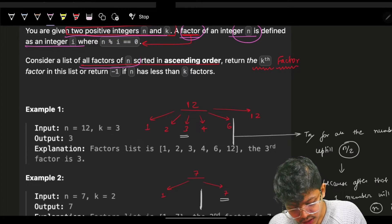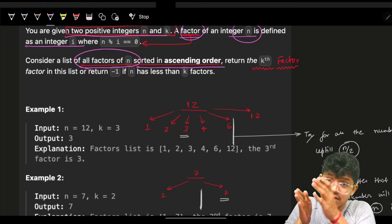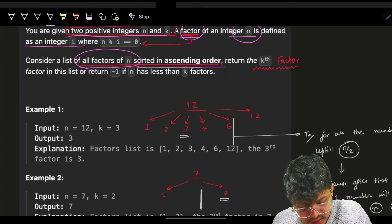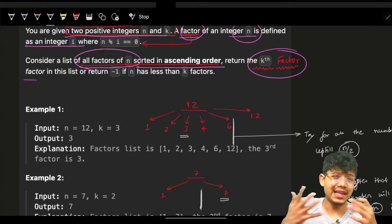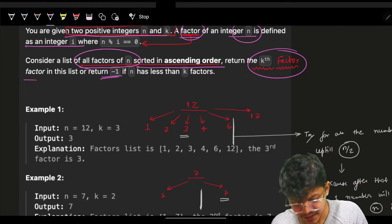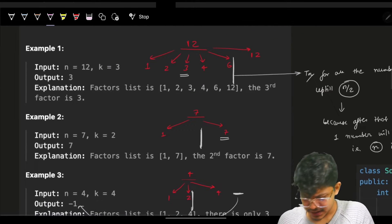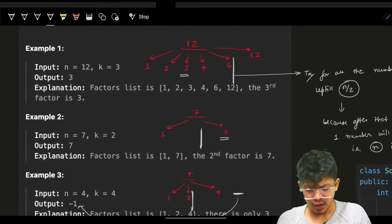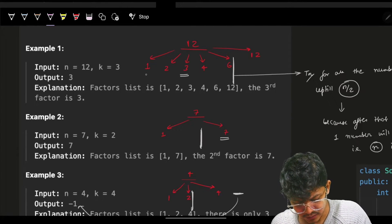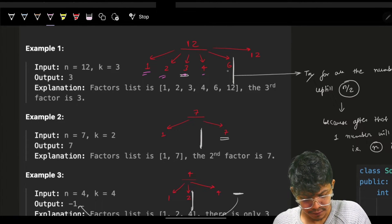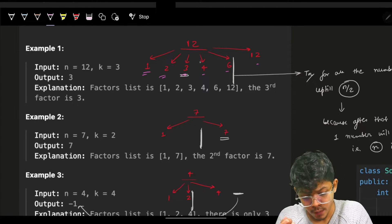We consider a list of all the factors of n sorted in ascending order, and we return the kth factor in that list. If k is out of range, we return -1. For example, if n is 12, the factors are 1, 2, 3, 4, 6, and 12.